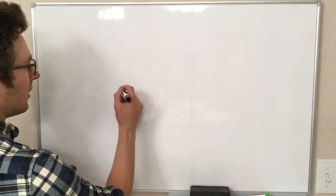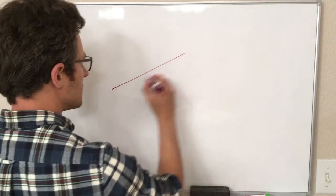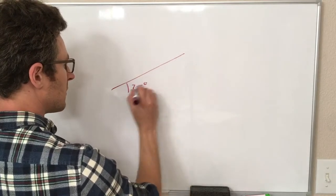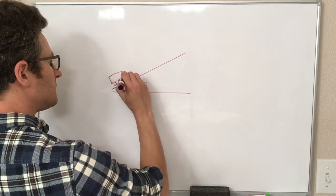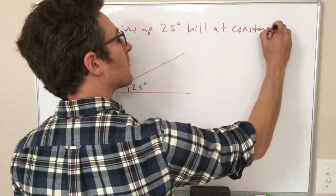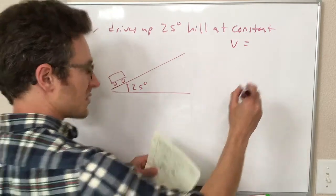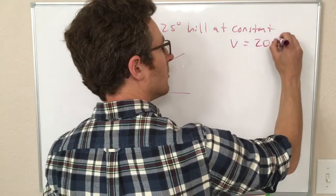So let's say we have a hill that is 25 degrees, and I have a car driving up this hill with a constant velocity of 20 meters per second.